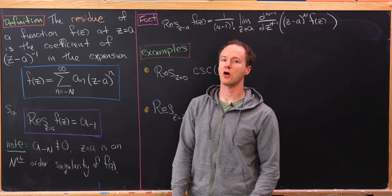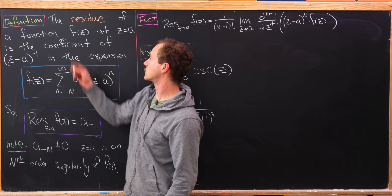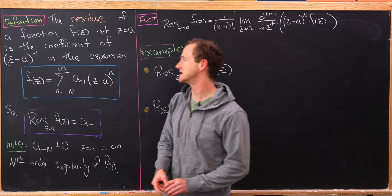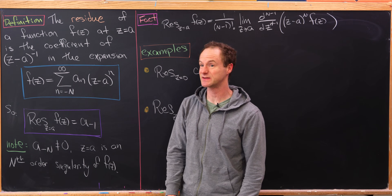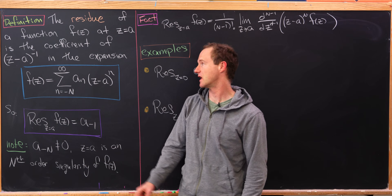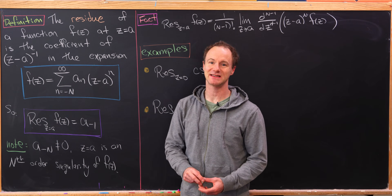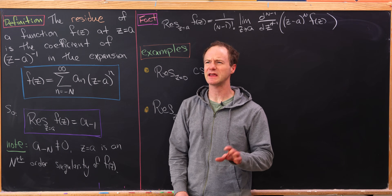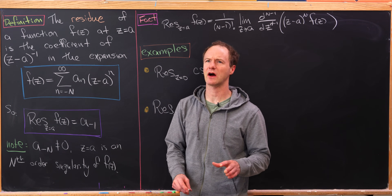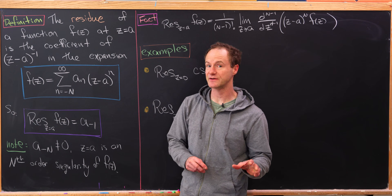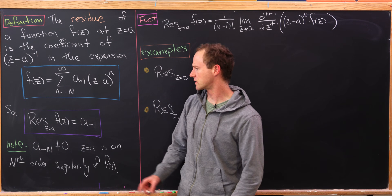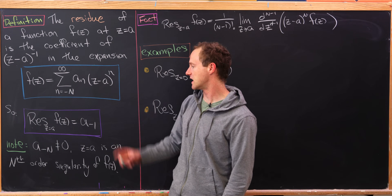Before we do that we should probably recall what a residue is. The residue of a function f(z) at a complex number a is simply the coefficient of (z minus a) to the negative one in the so-called Laurent series expansion, which can be written as the sum as n goes from negative capital N up to infinity of a_n times (z minus a) to the n. In other words, this residue is simply a_{-1} in this expansion.